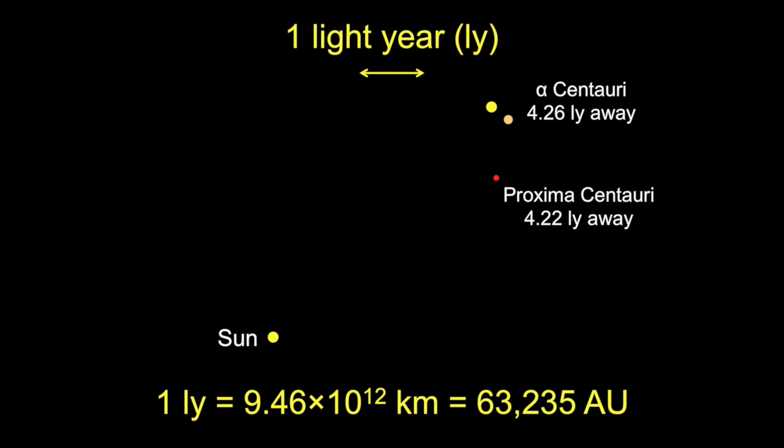The light year is the distance traveled by a photon — light — in one calendar year, a year being the time it takes the Earth to orbit the Sun. In familiar metric units, one light year is 9.46 trillion kilometers, or 63,235 astronomical units. The nearest star, Proxima Centauri, is a faint dim red dwarf star 4.22 light years away, about 267,000 AU away. It is part of a triple star system whose core is the binary Alpha 1 and Alpha 2 Centauri, located 4.26 light years away — the nearest sun-like stars to our solar system.